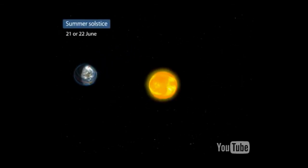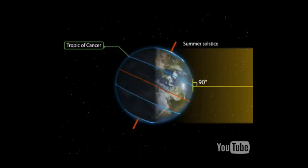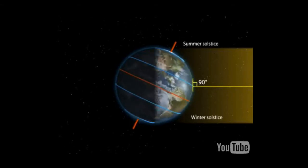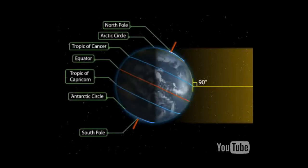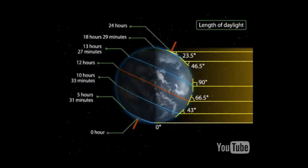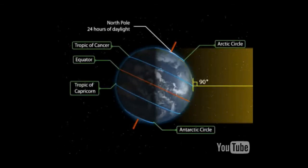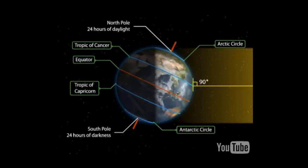At the summer solstice on the 21st or 22nd of June, the overhead sun is over the Tropic of Cancer, which receives the largest amount of solar radiation. The northern hemisphere is in the summer solstice while the southern hemisphere is in the winter solstice. The angle of the sun decreases towards the poles. The length of daytime in the northern hemisphere is the longest in the year, while that of the southern hemisphere is the shortest. There are 24 hours of daylight at the Arctic Circle and 24 hours of darkness at the Antarctic Circle.